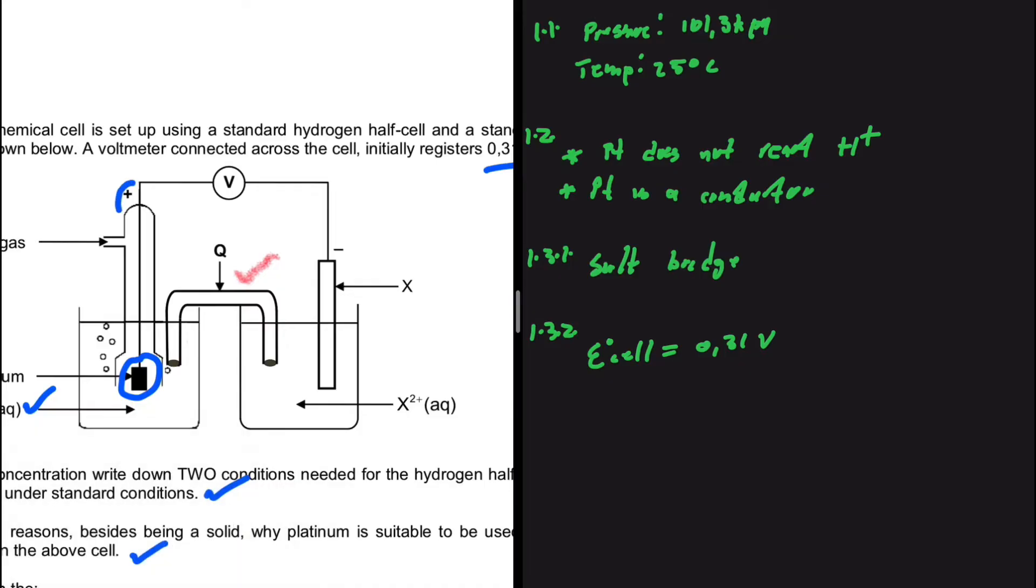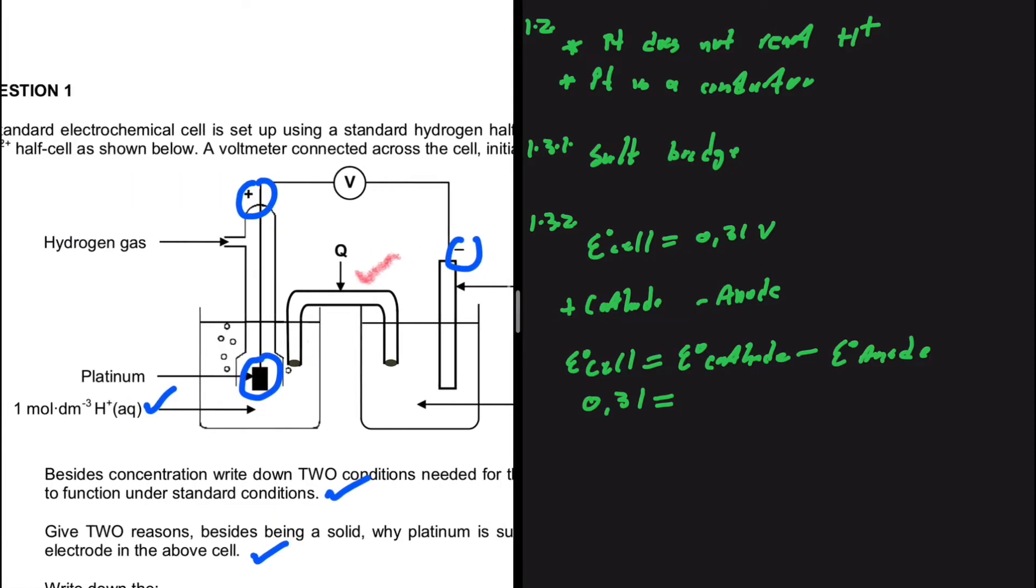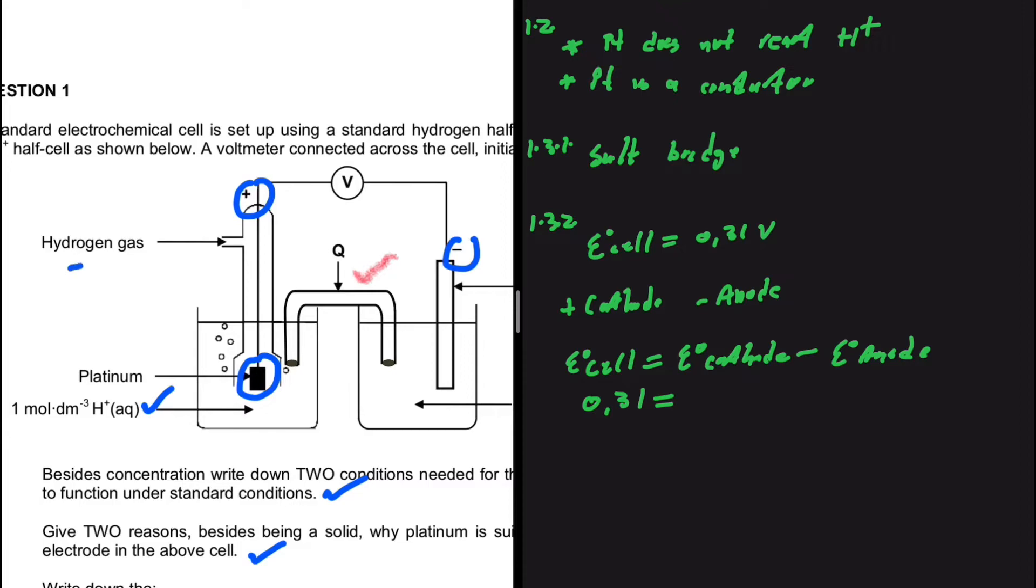So the EMF of our cell initially is 0.31 volts. Now let's get our setup. This is the positive electrode and this is the negative. In a galvanic cell, the positive electrode is the cathode and the negative is the anode. So what are we saying? We're saying that the potential of our cell can be determined by saying the potential at the cathode minus the potential at the anode.